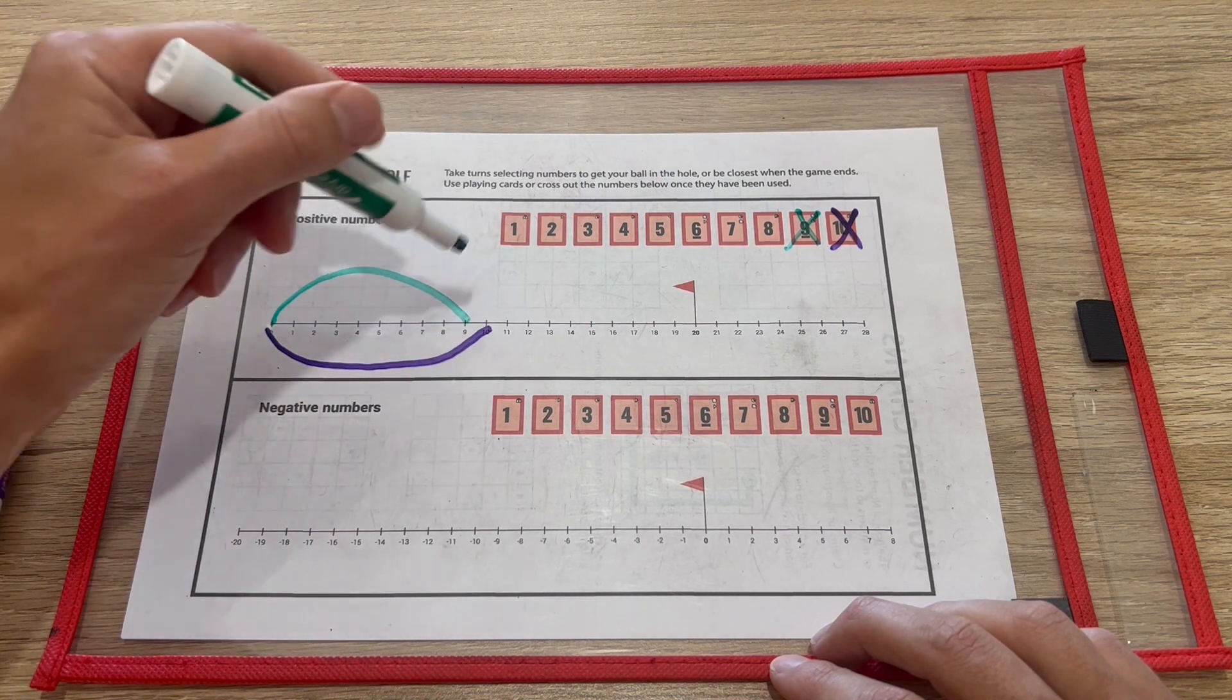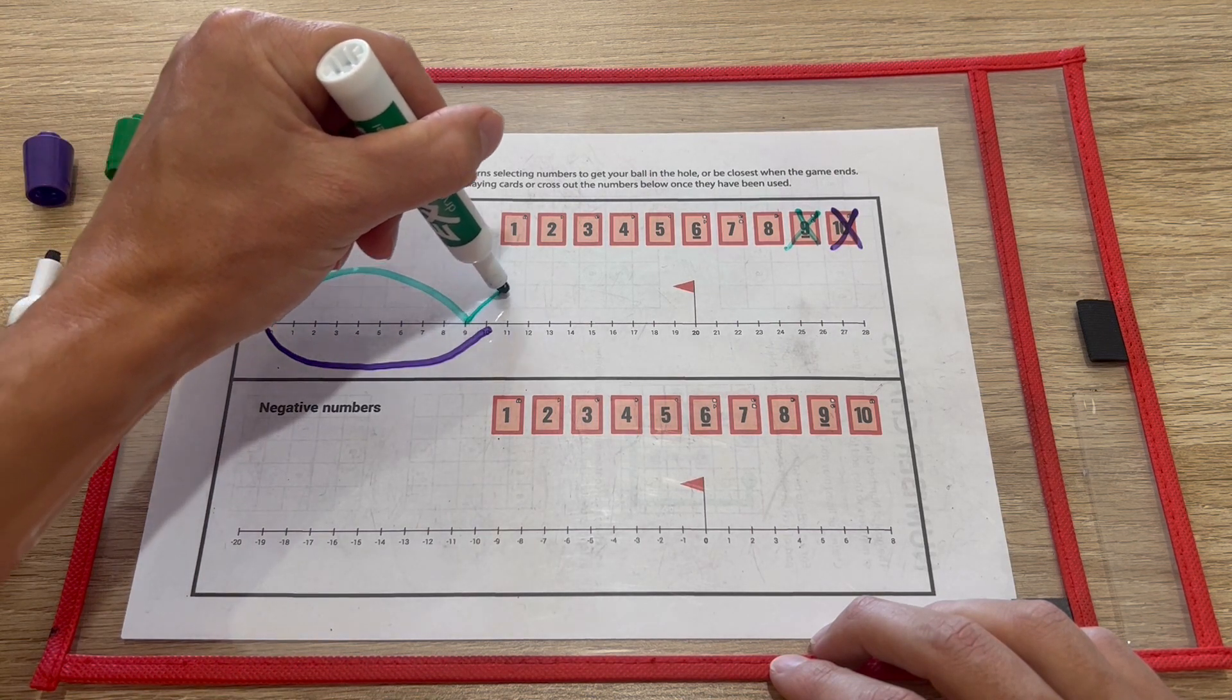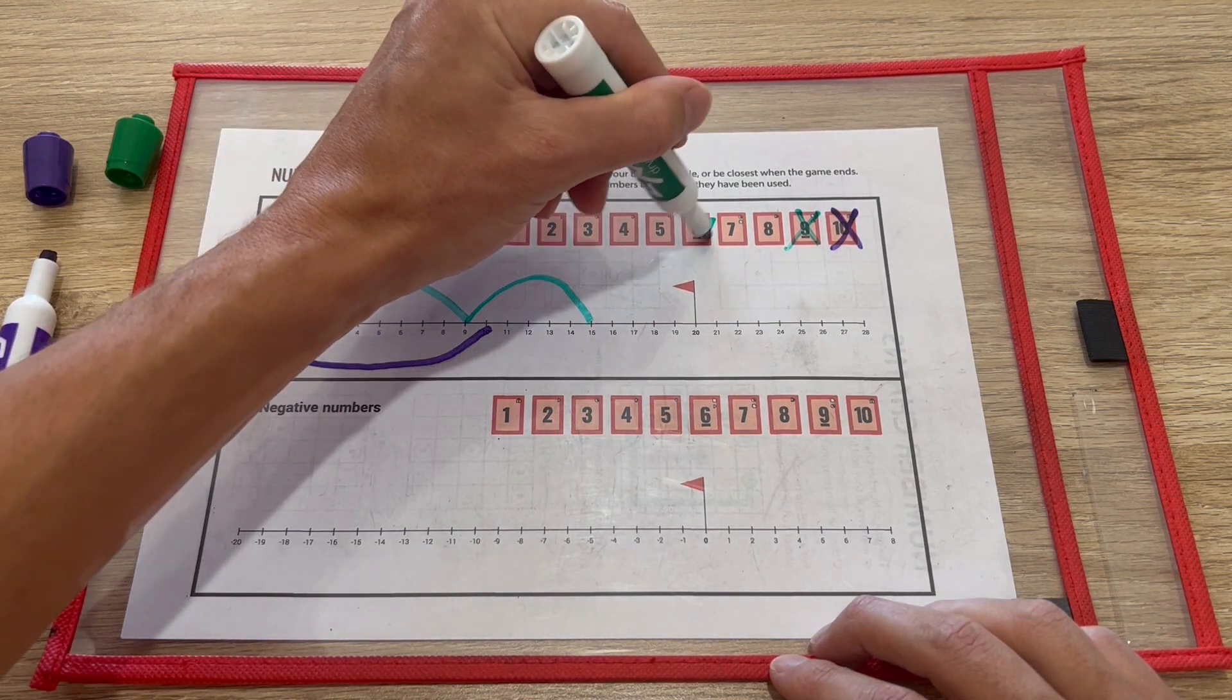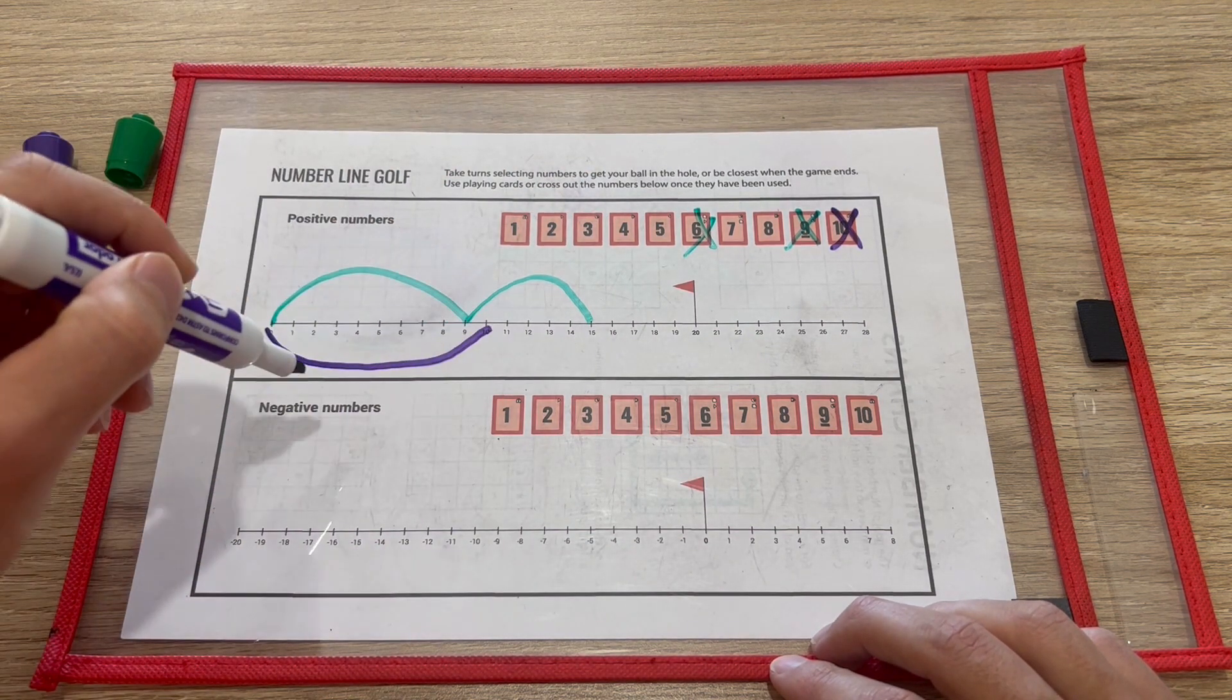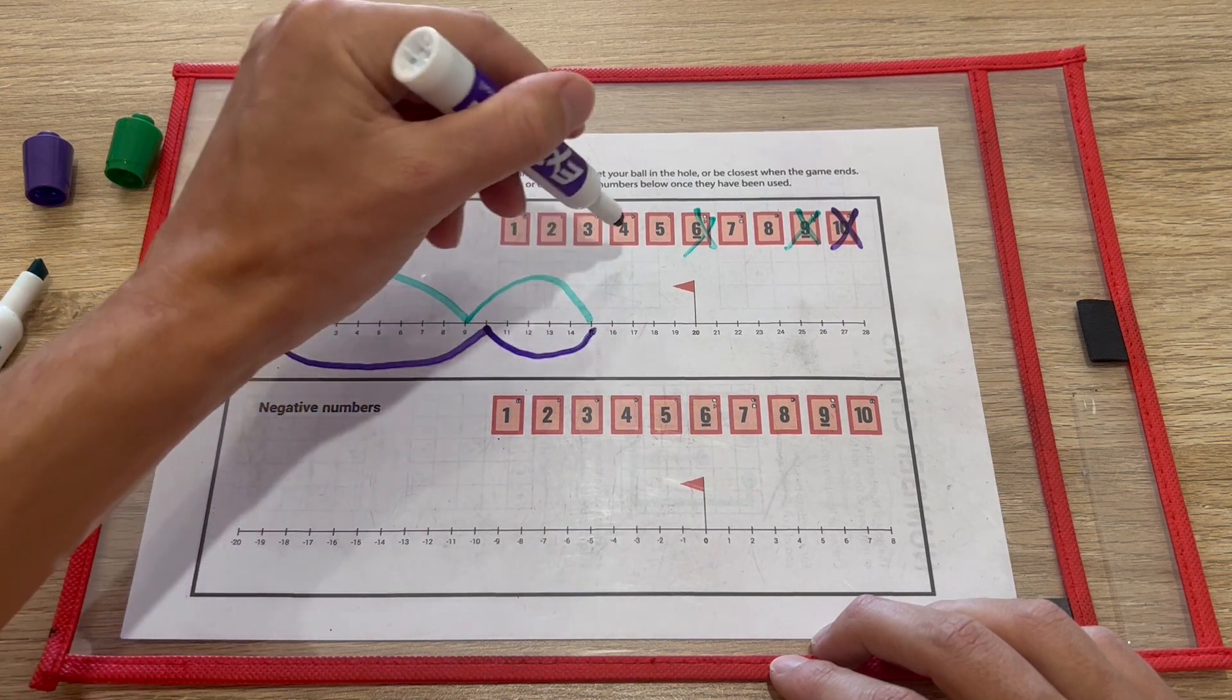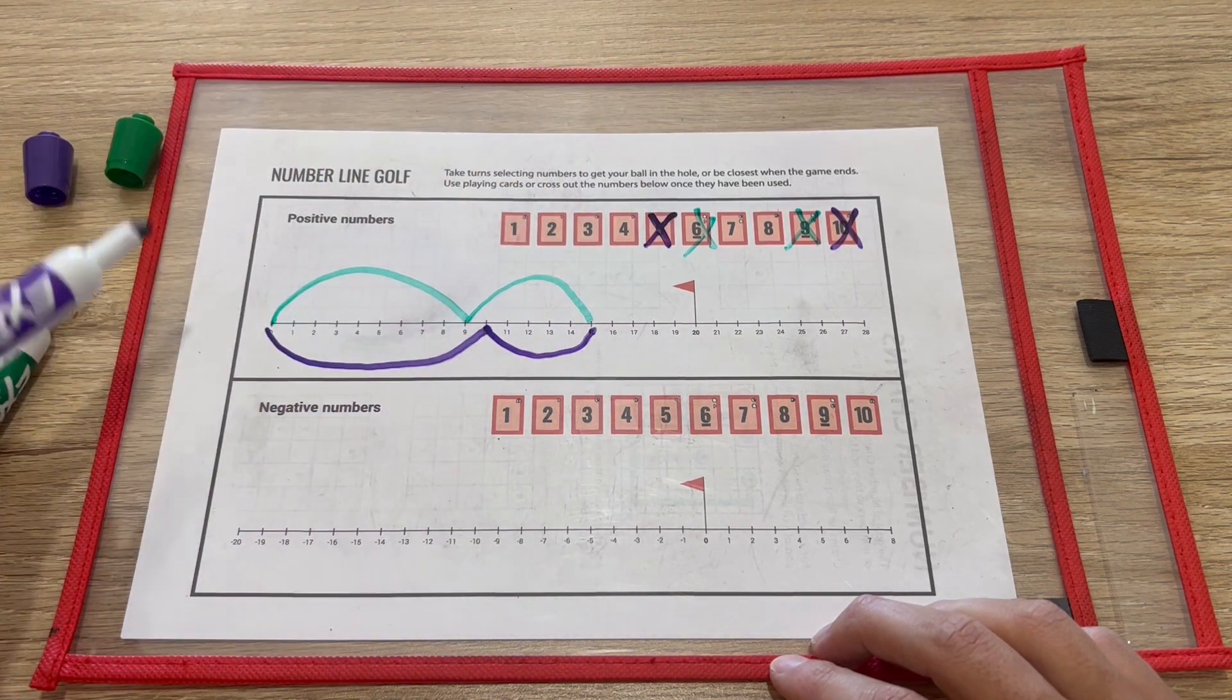So now the green person might pick, say, a 6, so they move to 15, which means the purple person knows they need a 5 to win. So if they're smart, they'll pick the 5, which means neither player can win next turn.